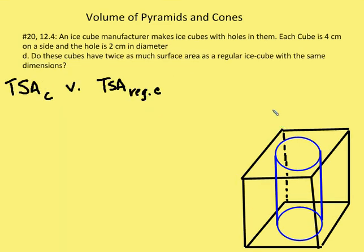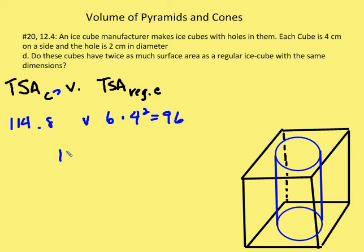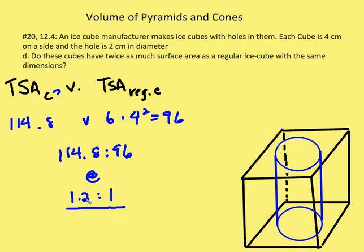The last part asks how the surface area of the cube with the hole compares to a regular cube. The cube with the hole has surface area 114.8; the regular cube is 96. The ratio 114.8 to 96 is roughly 1.2 to 1. The manufacturer's claim that it cools water twice as fast is false — the surface area is only about 20 percent greater than a regular cube.